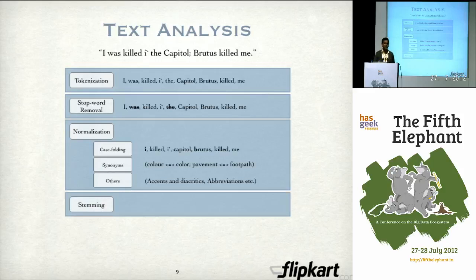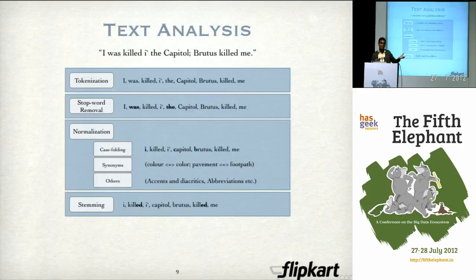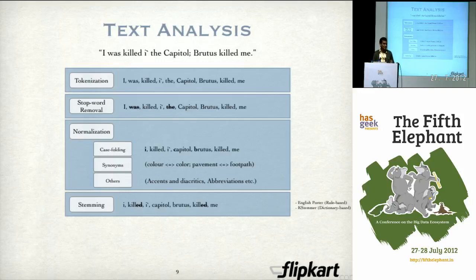Another thing search engines do is what is known as stemming. Stemming is where different inflections of a word — different forms of a word — are translated to its base form. So you can take something like 'killer,' 'killed,' 'killing' and transform them all to 'kill.' The stemming and most of the things I am talking about are done both at search time as well as index time. There are rule-based stemmers as well as dictionary-based stemmers. Getting the stemming right is actually pretty tough — Google had not introduced stemming until about 2003.